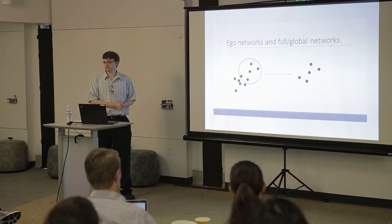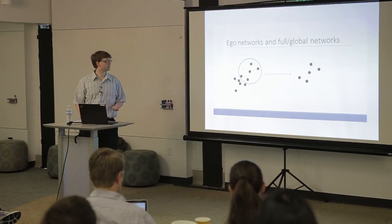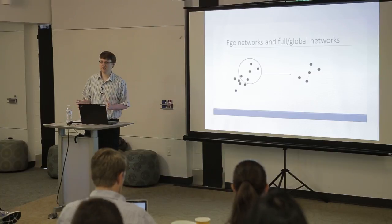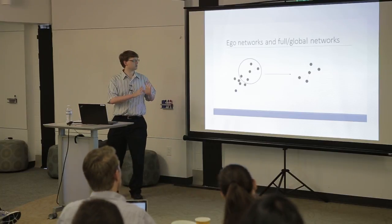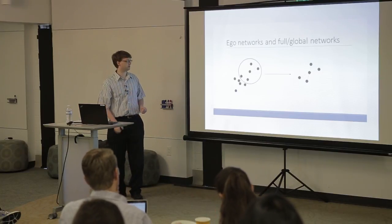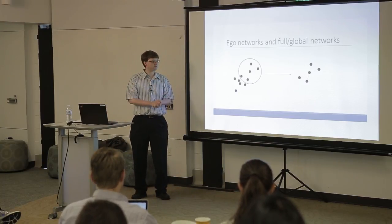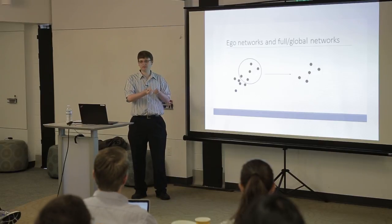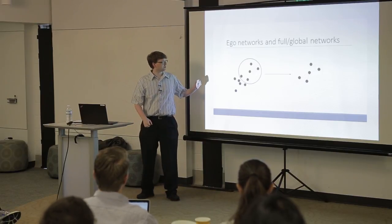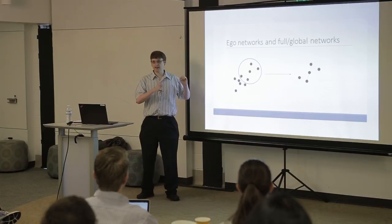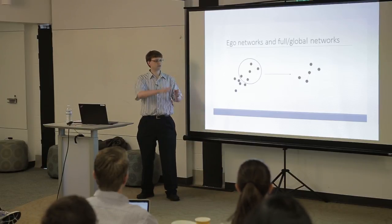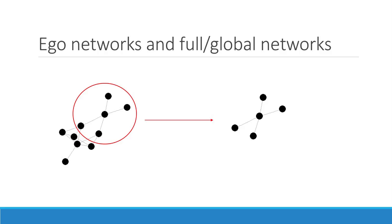Ego networks versus full networks: what is the difference? An ego network is basically a component of a full network. If you gathered a network in a closed system and knew everybody's relationships, you could pull out any individual node and just look at that person's ties — and that's basically an ego network. On the right side, you could think of that as an ego network of the central node.